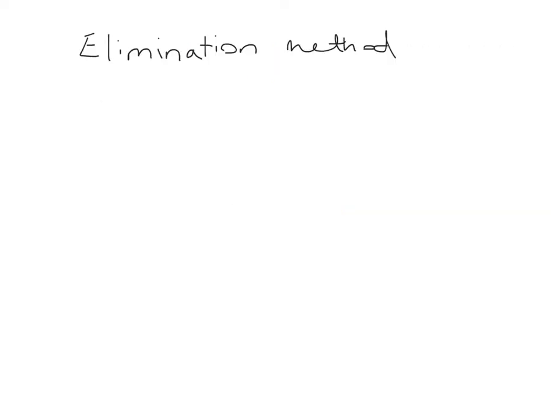The first method we're going to look at is called the elimination method. In my opinion this is probably the easiest one, and the one you'll use most in class. Just remember it is the same as graphing and finding the points of intersection, however we don't need a graph to do it. With the elimination method, you are trying to eliminate either the x or the y.